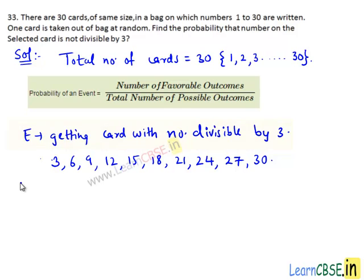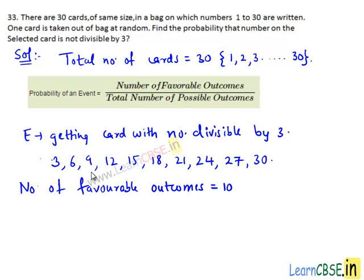Then the number of favorable outcomes equals 10, since the cards with the numbers 3, 6, 9, 12, 15, 18, 21, 24, 27, and 30 are divisible by 3.